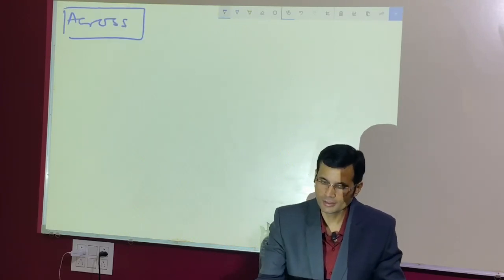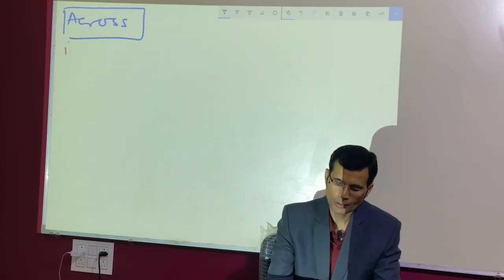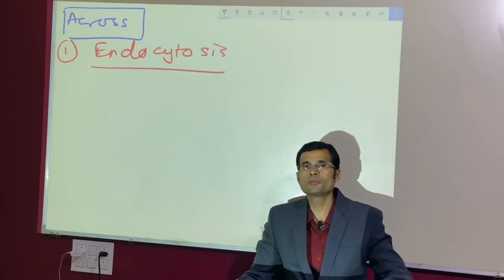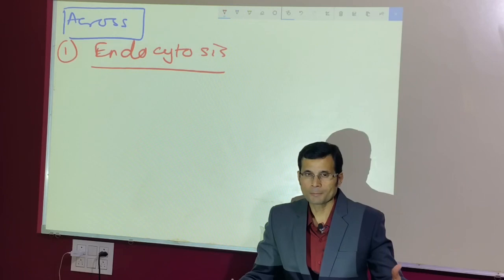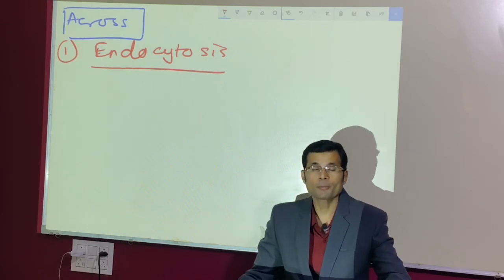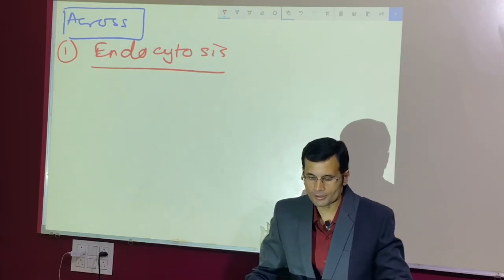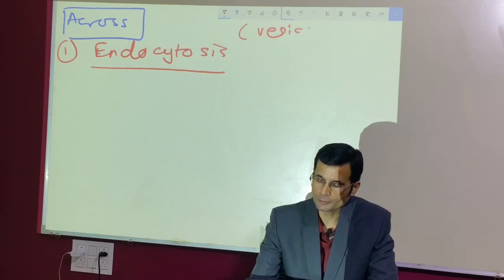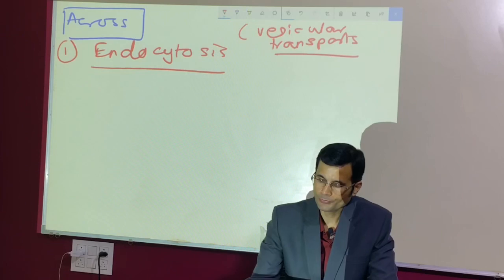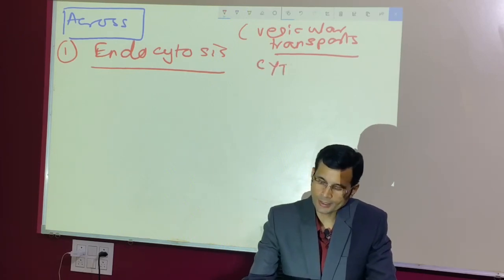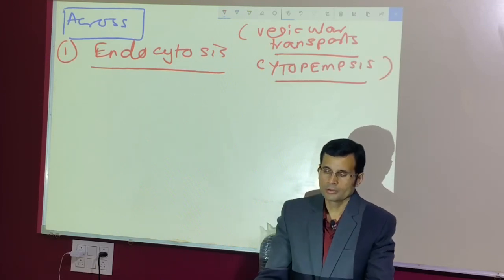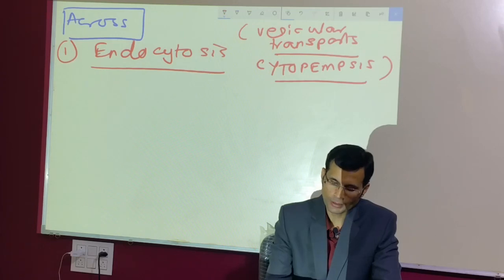Endocytosis and exocytosis — let's start with endocytosis. These transports across the membrane occur by the formation of vesicles. The transported substance is inside a vesicle, so these are also called vesicular transports. Another term used for vesicular transports is cytopempsis.